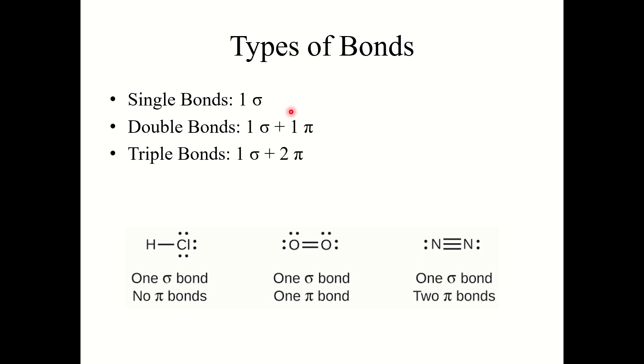Alright now we talked about in the previous chapter single bonds, double bonds, and triple bonds. You need to remember this. What are those bonds composed of? The easiest one to remember are single bonds. Single are sigma. So single bonds are one sigma bond.